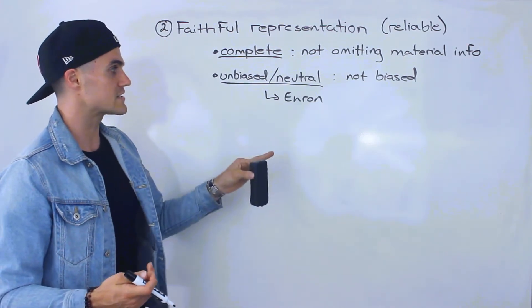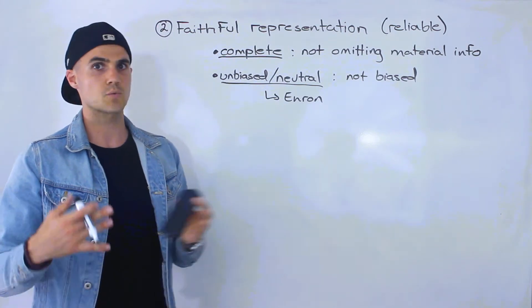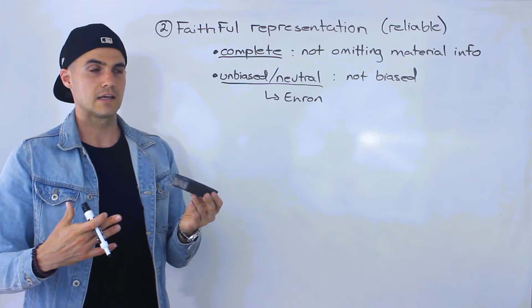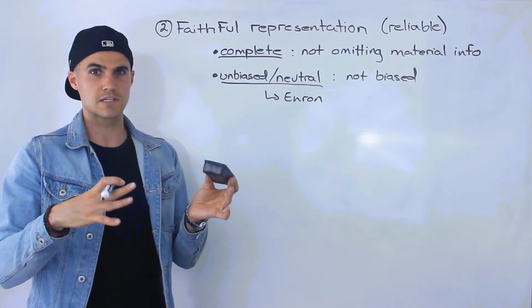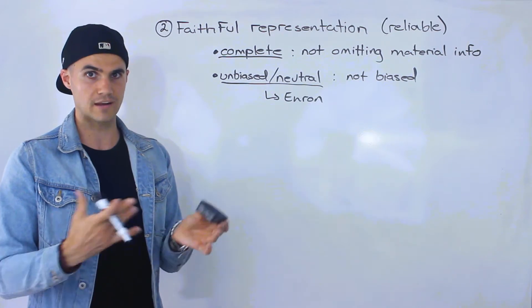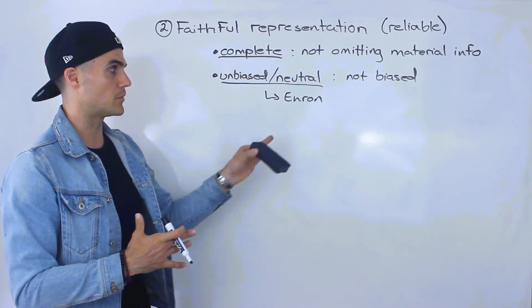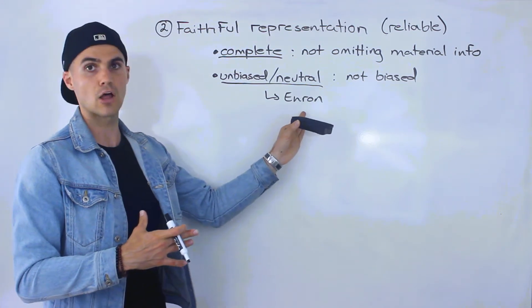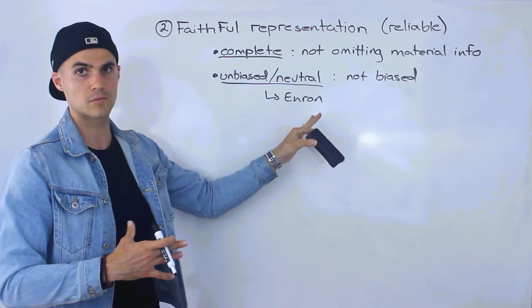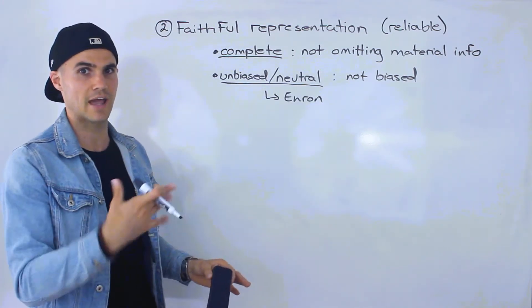But in Enron, the CFO, this guy named Andy Fastow, he was an executive. He was working with the accounting department and he was creating these limited partnerships, these sort of complex accounting entities. He was working and influencing the accounting department to basically cover up a lot of expenses and losses that Enron had and he was sort of hiding them under these complex accounting transactions. He was really influencing the accounting department.